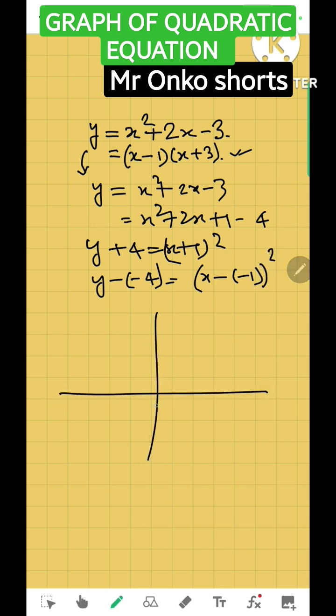In the Cartesian coordinate system, the vertex point is at (-1, -4).